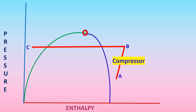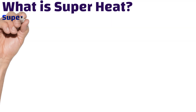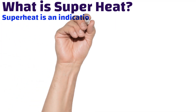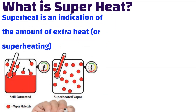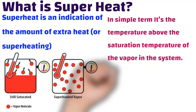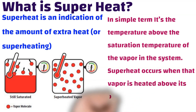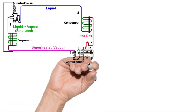The liquid in the evaporator completely changes to vapor before entering the compressor — that added heat is called superheat. Superheat is an indication of the amount of extra heat or superheating. In simple terms, it's the temperature above the saturation temperature of the vapor in the system. Superheat occurs when that vapor is heated above its boiling point.